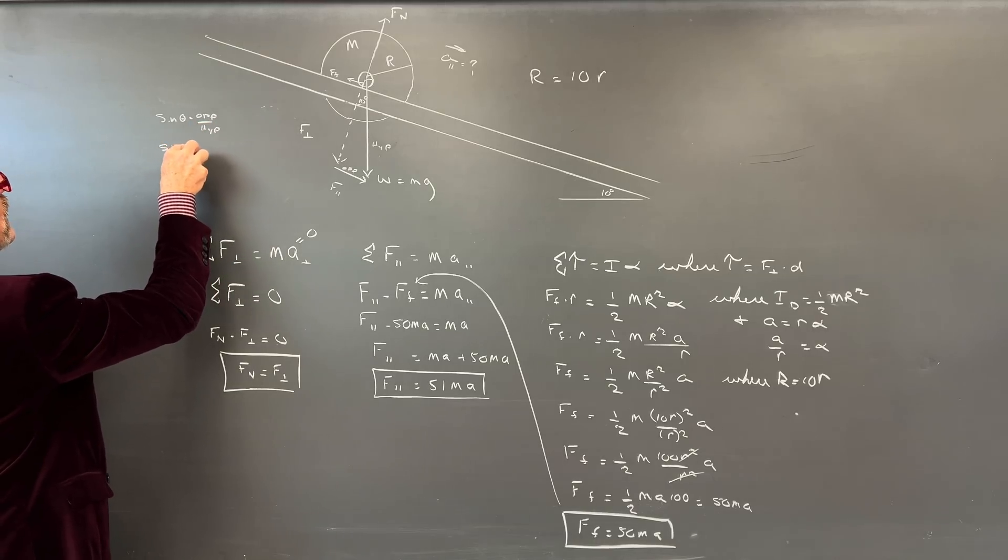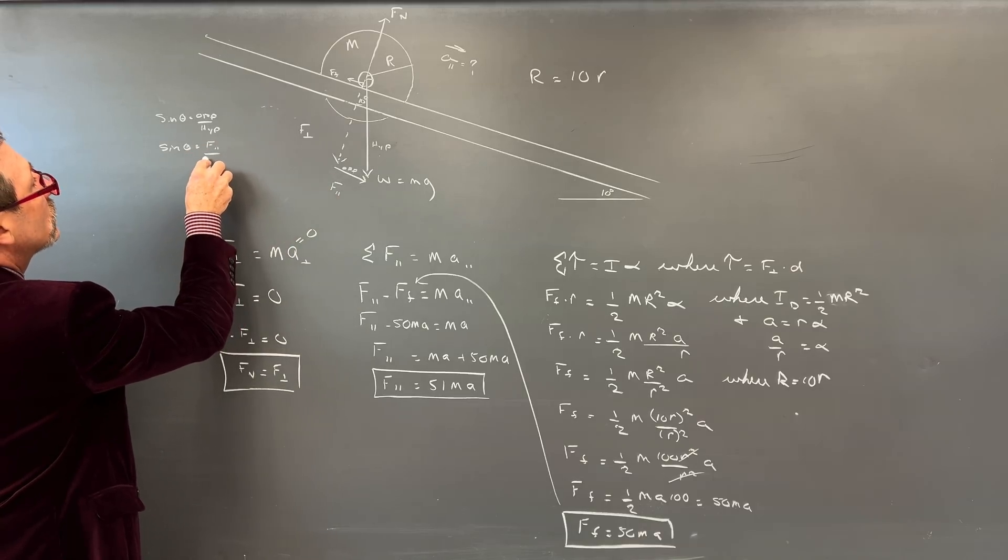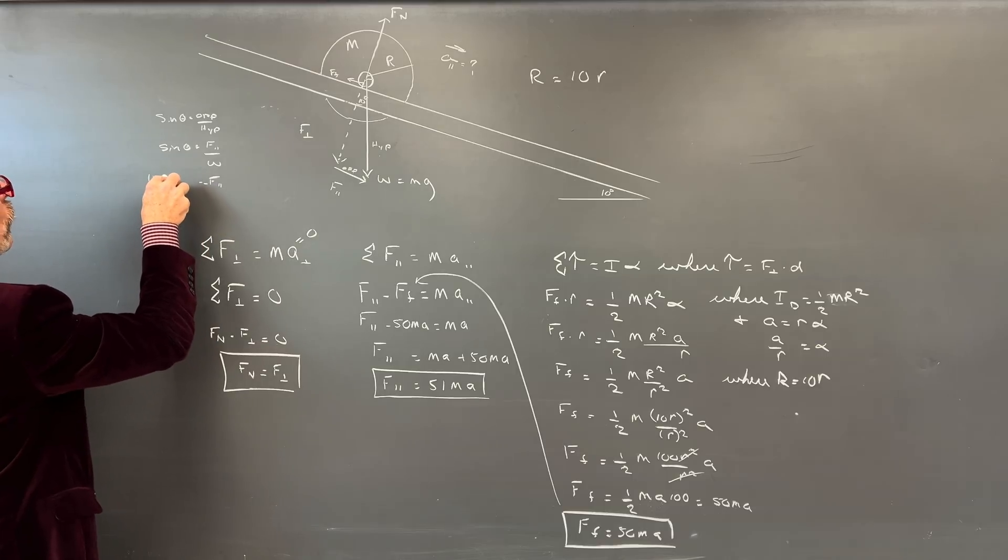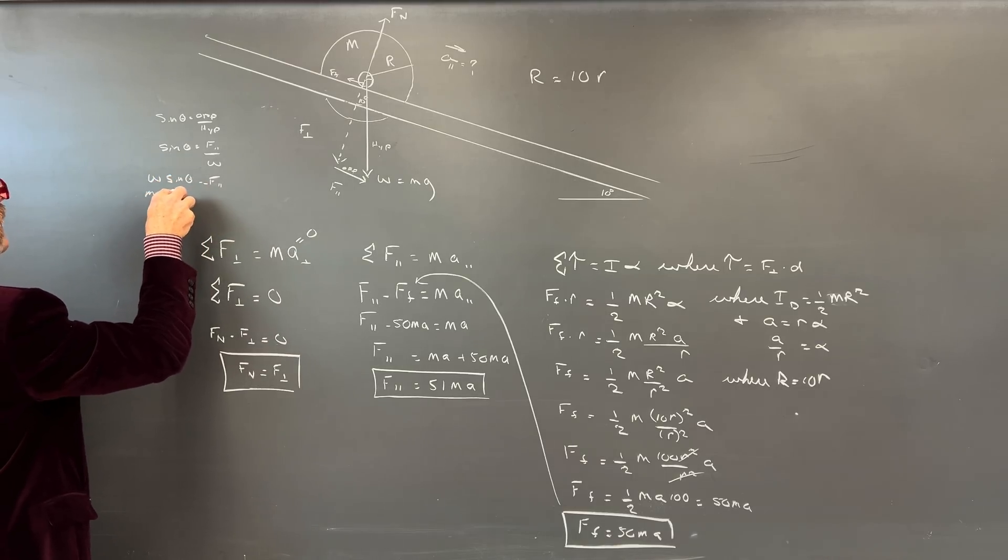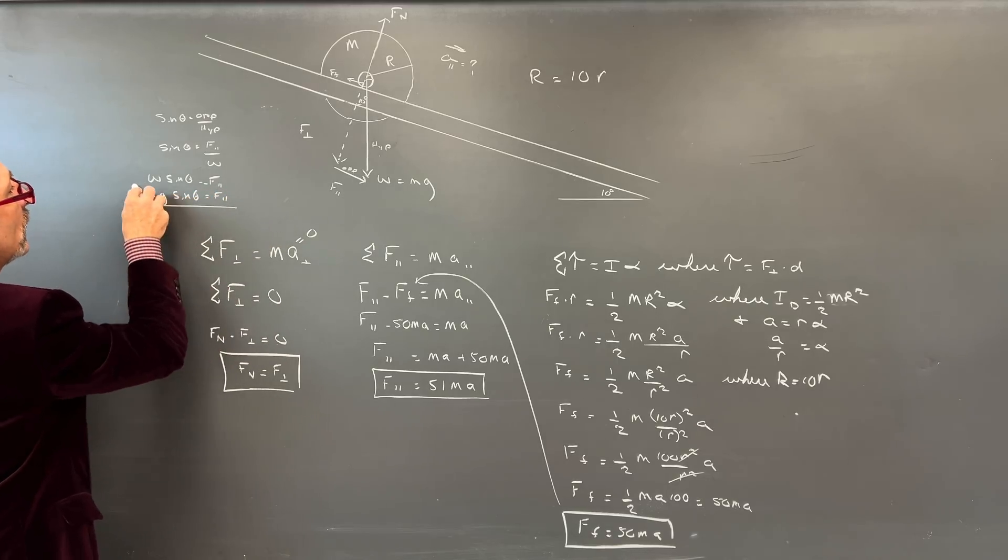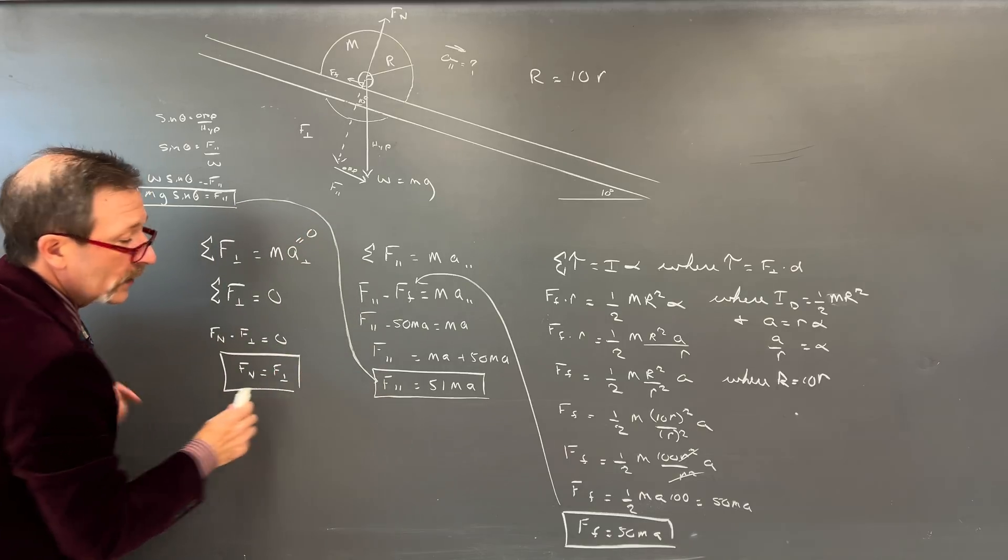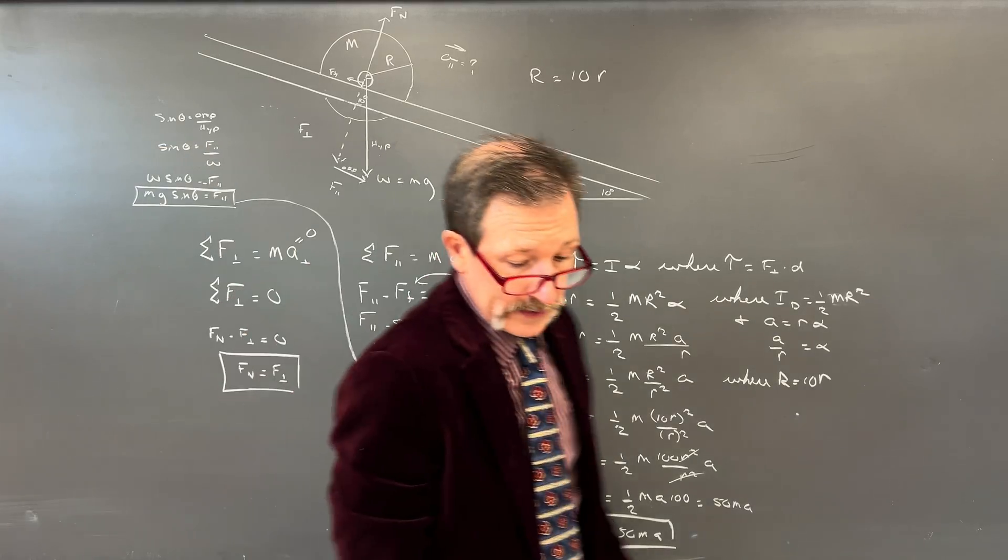R squareds cross out. Force of friction equals our 1 half Ma, and then we also multiply that by 100. So I can simply say that's also just 100 over 2 is 50. So that would be 50 Ma. So force of friction equals 50 Ma.